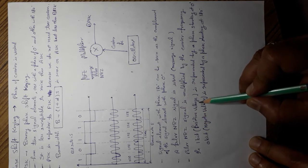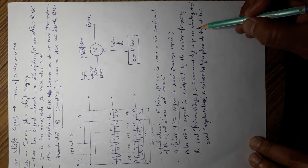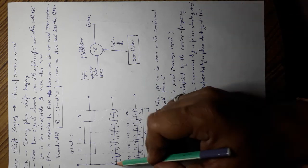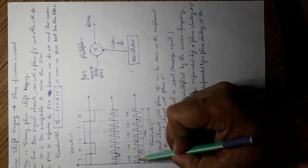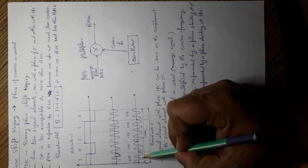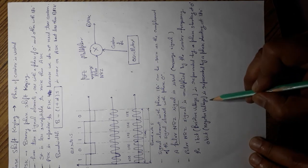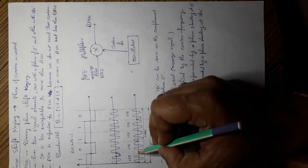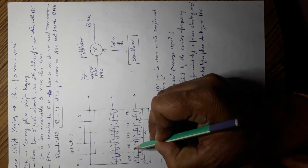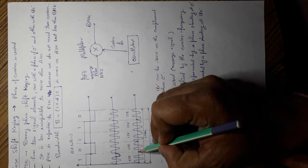One bit positive voltage is represented by a phase starting at zero degree. Zero bit negative voltage is represented by a phase starting at 180 degrees.